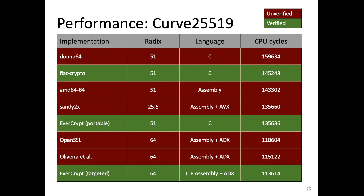On the asymmetric side, elliptic curve Curve25519 is a popular choice these days and is used, among other places, in TLS 1.3. This table summarizes the performance of various implementations of the core operation of computing a point multiplication, measured in CPU cycles — so smaller is better. Verified implementations are shown in green and unverified in red. EverCrypt's verified portable implementation beats prior portable implementations and even some assembly implementations, while our targeted version outperforms all prior work.